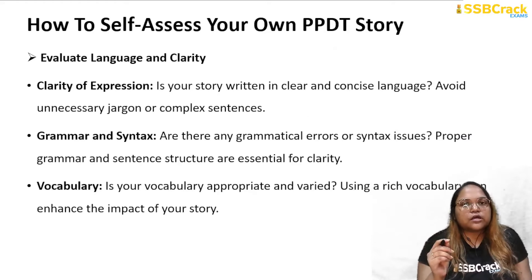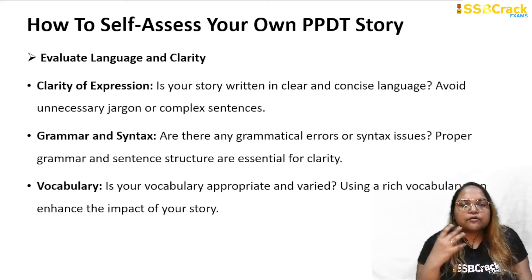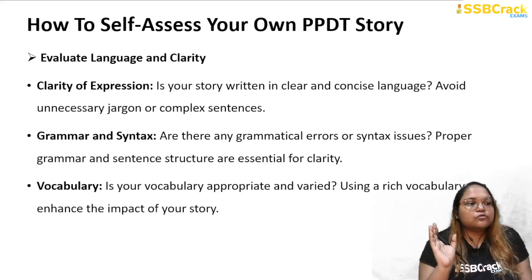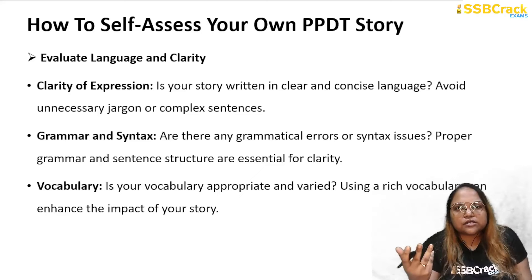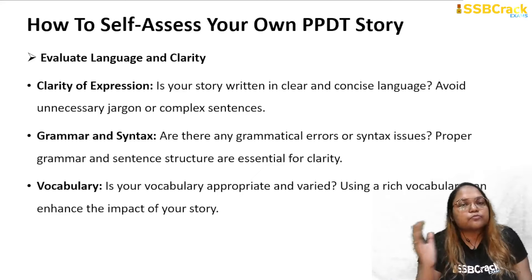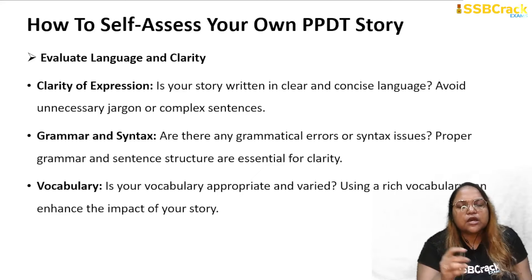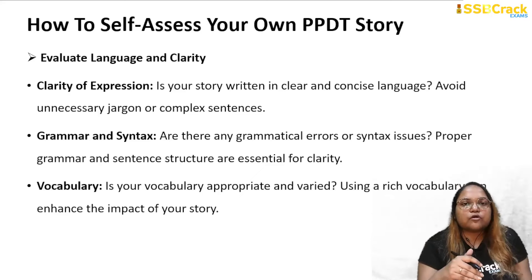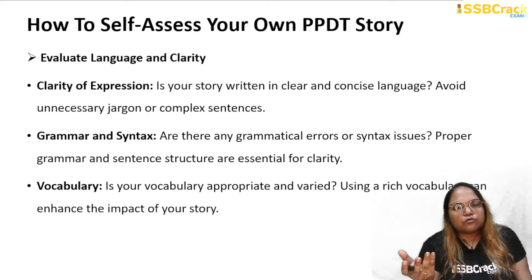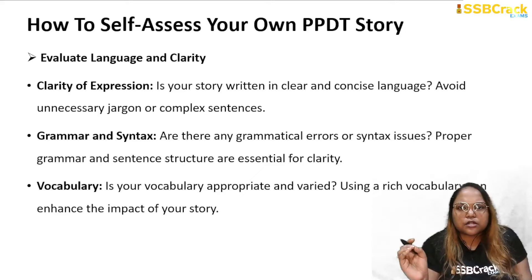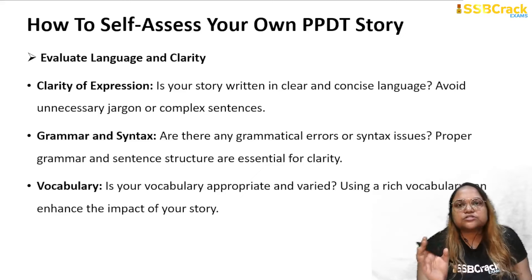The next thing to check is language and clarity. The language you use in the story should be clear and to the point — do not over-explain. Avoid complicated sentences, unnecessary words, or excessive descriptions. Pay special attention to grammar and syntax, and avoid spelling mistakes. For vocabulary, you do not need to use rich or complex vocabulary — write simple, clear English sentences.